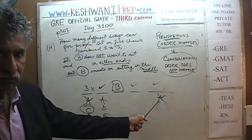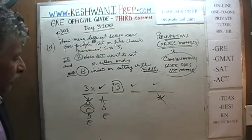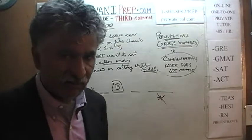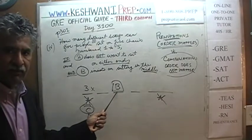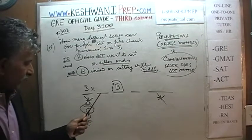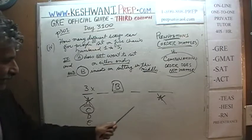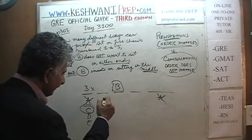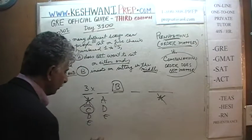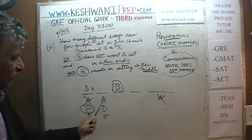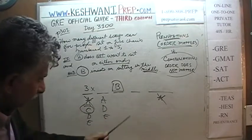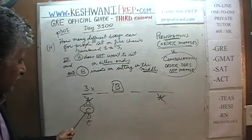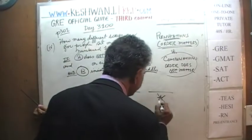So the mistake I made was going directly to the second chair. We must always satisfy the conditions first before we worry about anything else. First the positive conditions — B must sit in the middle, done. Now the negative conditions: A cannot sit on this end, so we have three choices here. A also cannot sit on the other end, so we must take care of that next. If B is here and C is here, we can have either D or E on that far end — two choices.